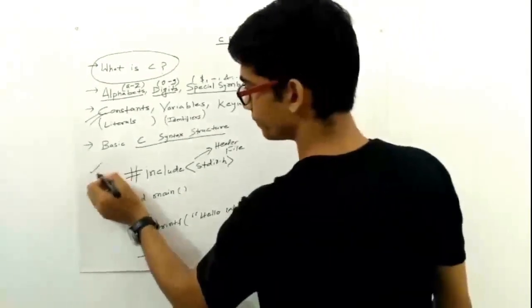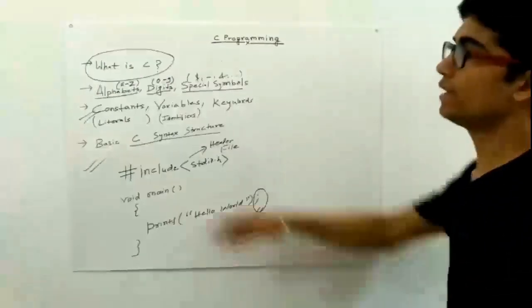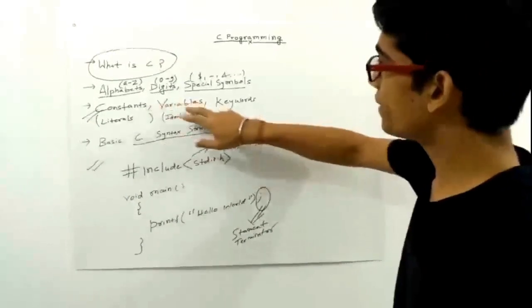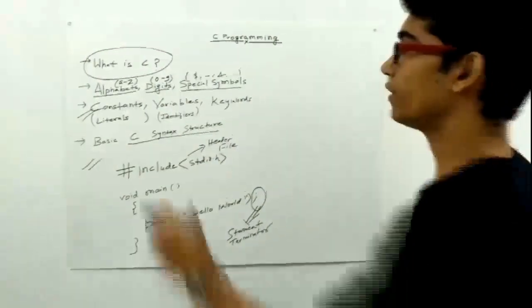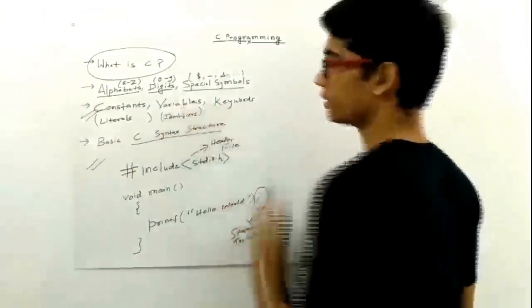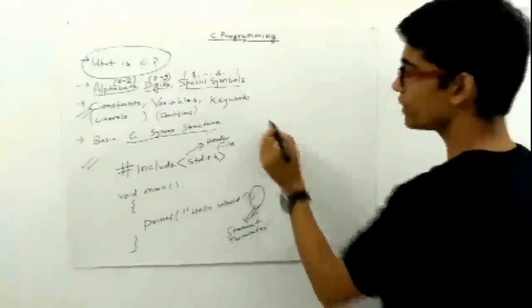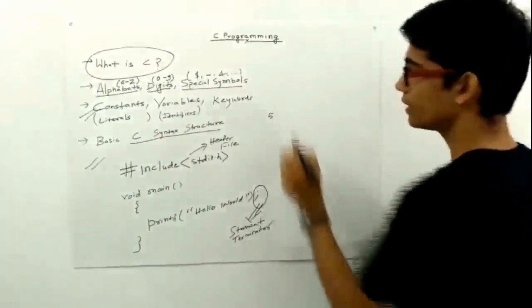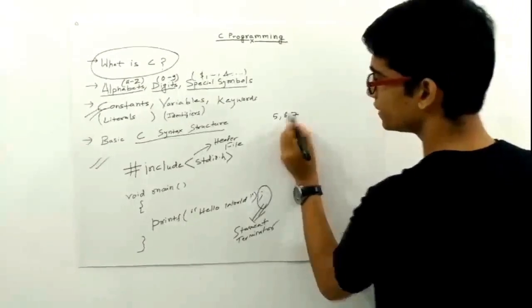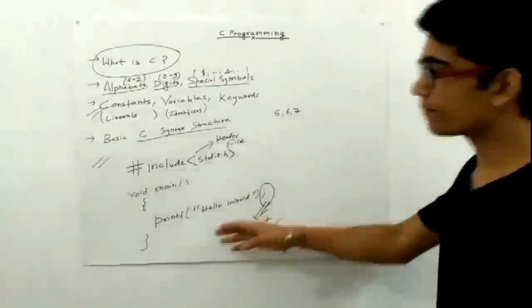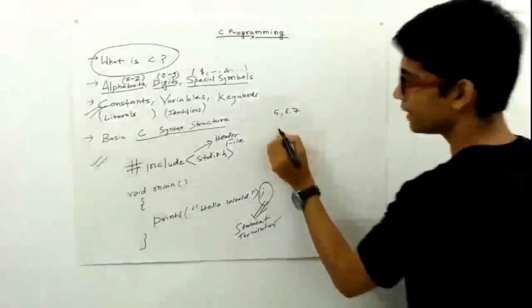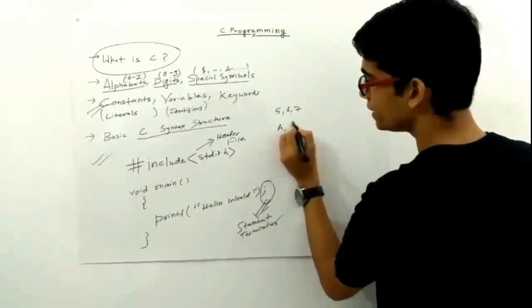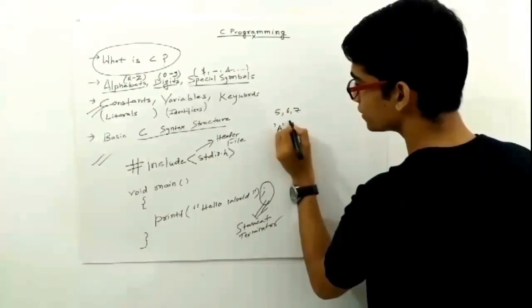So this was the very first C program. Now coming to constants, variables, and keywords. What are constants? Suppose we write 5, 6, 7—these are constants in C. These are treated as constants. Again, a, b—these are constants.